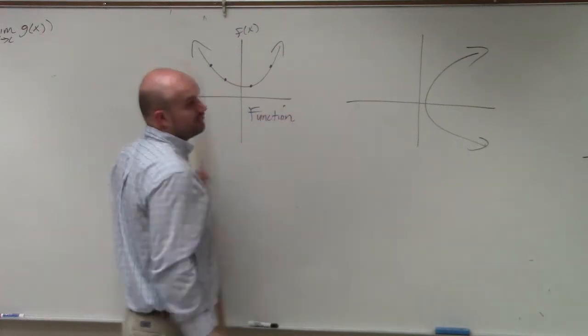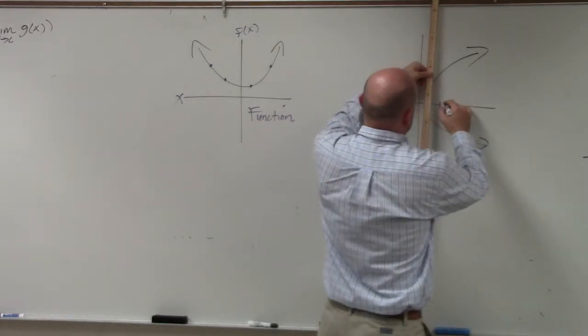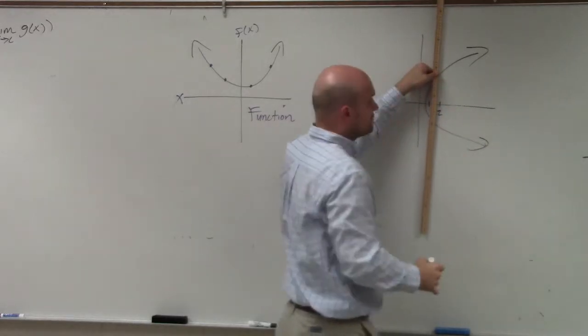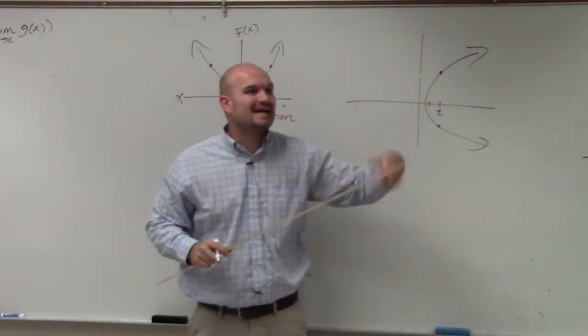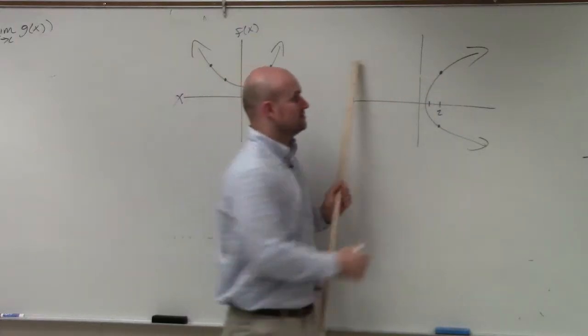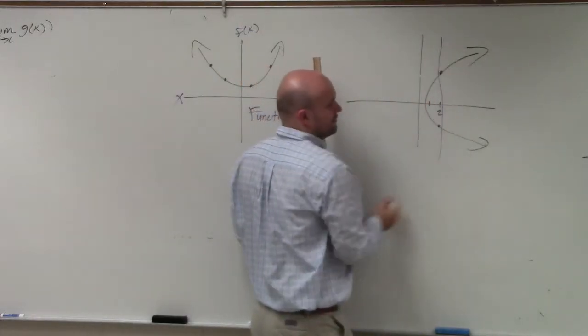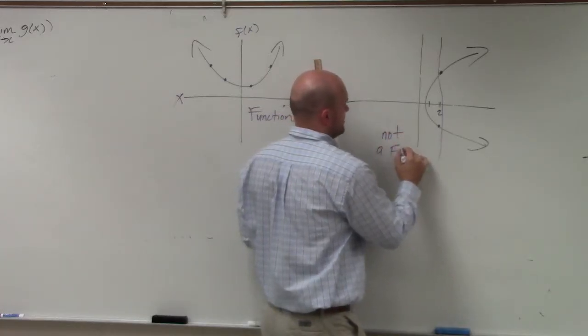However, when we look over at this graph, we see that this x value, let's just look at x equals 2. When x equals 2, there's two outputs. Meaning, I plugged in a number 2, and I got two different answers. That does not make a function. It does not cross the vertical line test. So that would be an example of not a function.